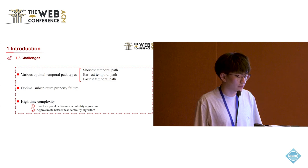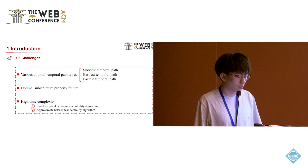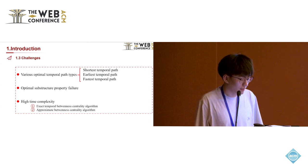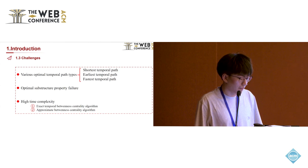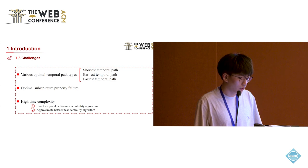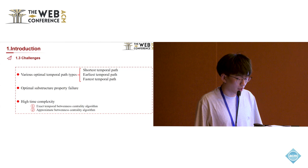For temporal graphs, the optimal temporal path loses a critical property called the optimal substructure property. Finally, existing methods have been proved to have high time complexity. It's not easy to count all the optimal temporal paths, and so research on approximate betweenness centrality algorithms becomes more important.